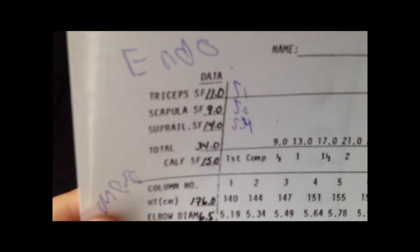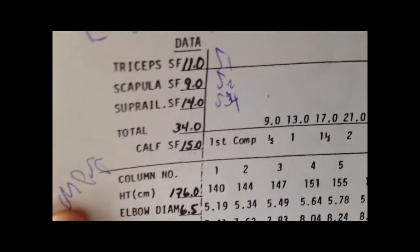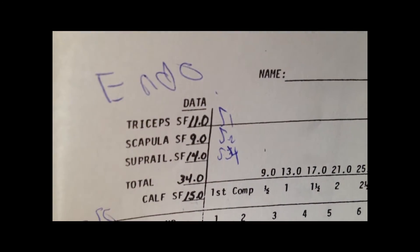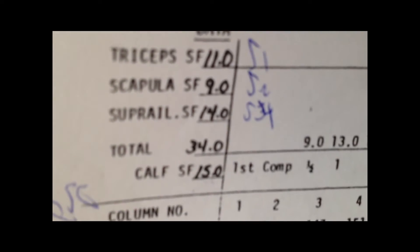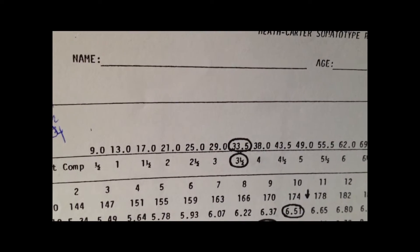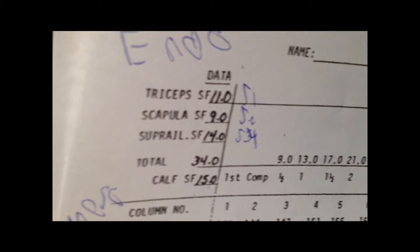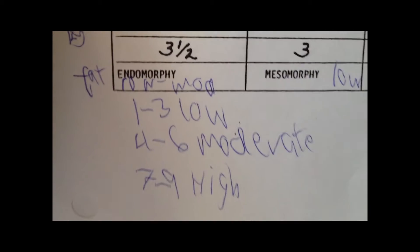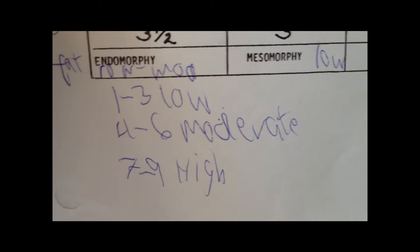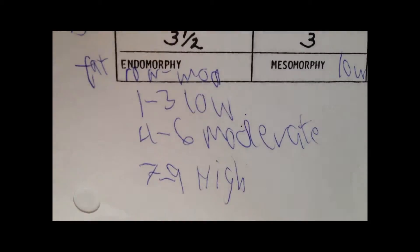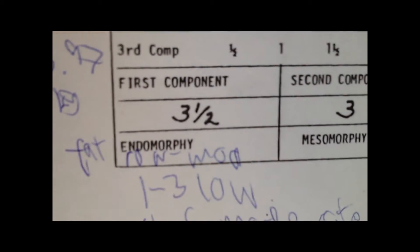For the endomorphic component, you're going to need the triceps, scapula, superiliac, and calf skin folds. The calf skin fold is used further down. The first three are in millimeters and are added up to a total of 34. The closest value on the chart is 33.5, so the number directly under it, 3.5, corresponds with that measurement sum. Based on the scale — 1 to 3 is low, 4 to 6 is moderate, and 7 to 9 is high — this person has a low to moderate endomorphic quality for their first component.